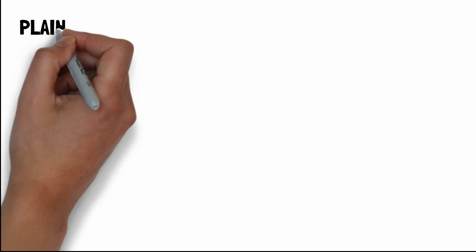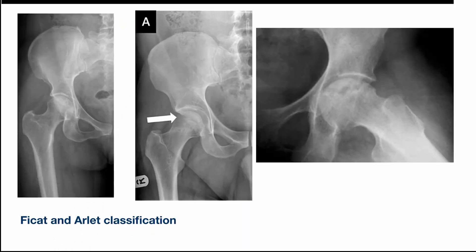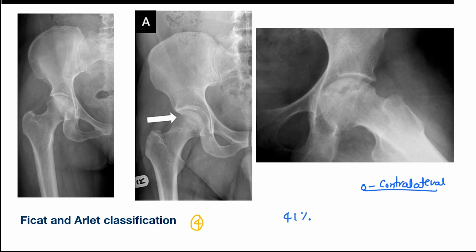For plain film radiography, we use the Ficat and Arlet classification, which has four stages. Stage 0 is called pre-clinical and pre-radiological. It is diagnosed only if the contralateral hip has already been diagnosed. Plain radiographs show normal findings, but there may be positive findings on MRI or bone scintigraphy.